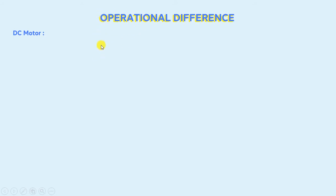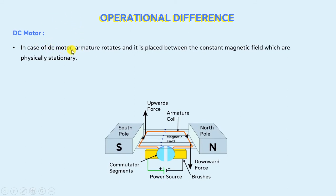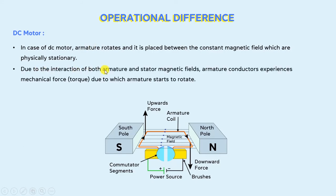Now we will overview the operational difference. In the case of a DC motor, the armature rotates and it is placed between the constant magnetic fields which are physically stationary. Due to the interaction of both the armature and stator magnetic fields, the armature conductors experience a mechanical force due to which the armature starts to rotate. This is how electrical energy is converted into mechanical energy, and this is how a DC motor works.